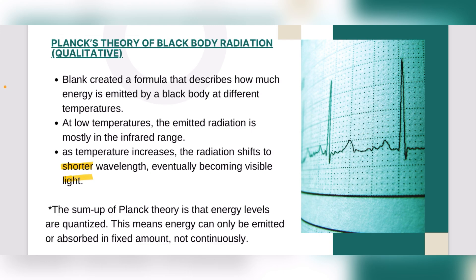He also said that at low temperatures, the emitted radiation is mostly in the infrared region. But as temperature increases, the radiation shifts to shorter wavelengths which become visible — they become visible light. So the sum-up of Planck's theory is that energy levels are quantized, meaning energy can only be emitted or absorbed in fixed amounts, not in a continuous form.